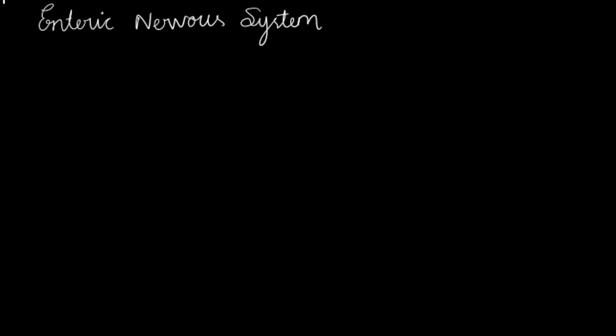Hello everyone. In continuation with the previous video, today we are going to see the Enteric Nervous System. In the Enteric Nervous System, we have two different types: one is the Intrinsic Nervous System and another one is the Extrinsic Nervous System.